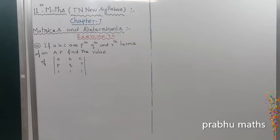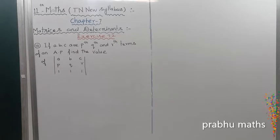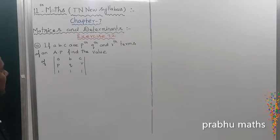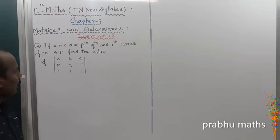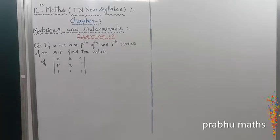Exercise 7.2: If a, b, c are the p-th, q-th, and r-th terms of an AP, find the value of the determinant with first row a, b, c; second row p, q, r; and last row...